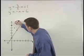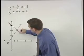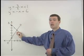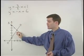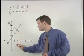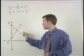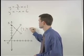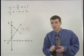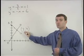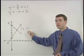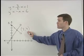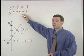So if we graph our second line, you can see that the two lines intersect at this point, which has the coordinates 2, 4. In other words, when x equals 2 and y equals 4, we have the solution for our system of equations.